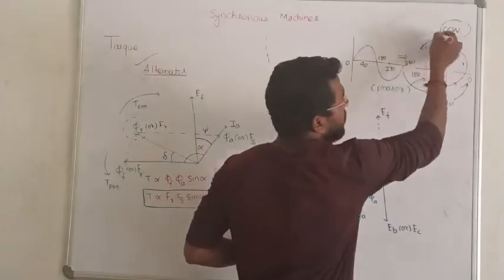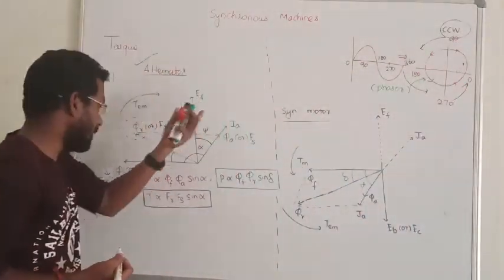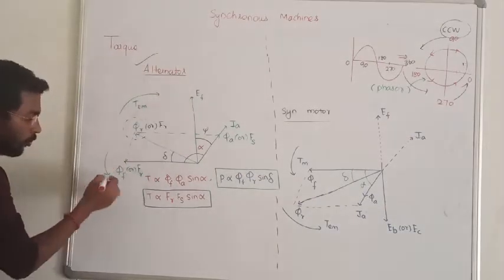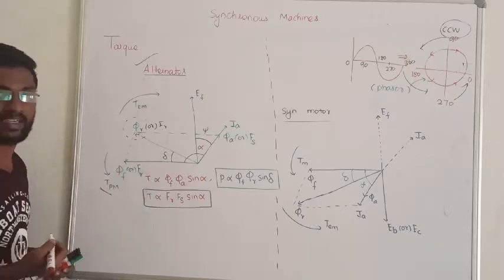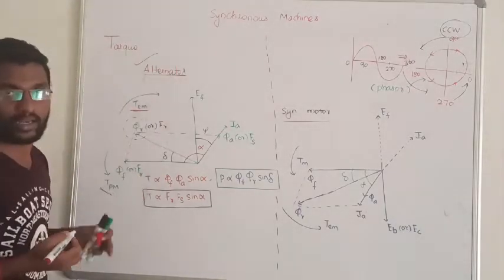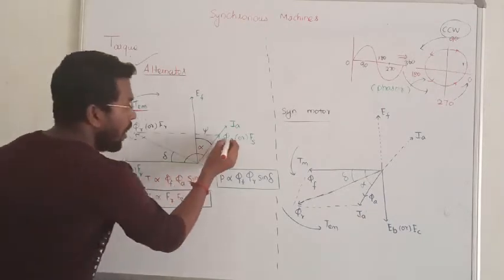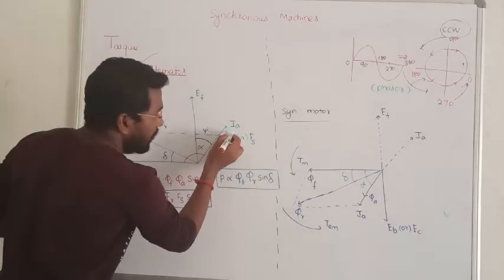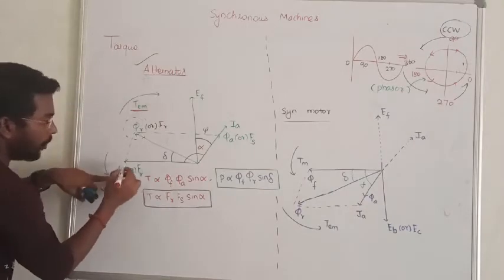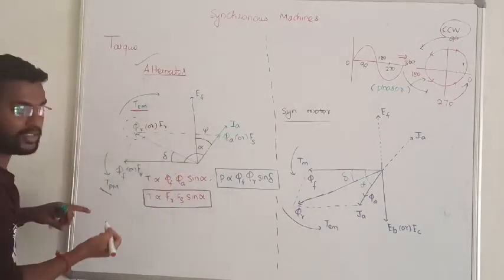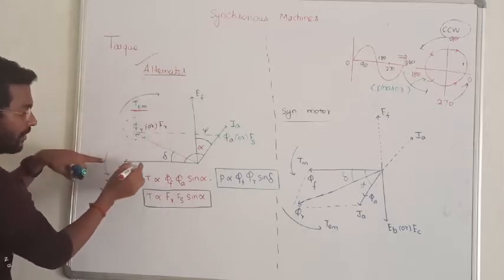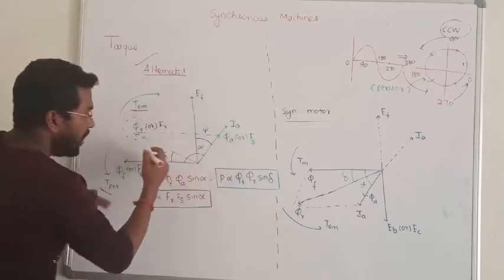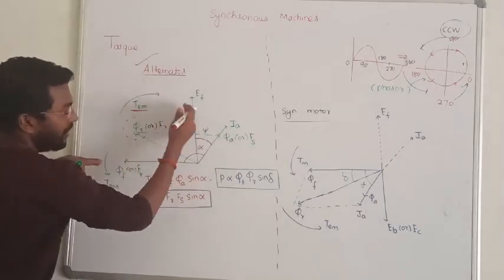Tell me, what is the direction of the phasor? The phasor rotates in counterclockwise direction. So we take the prime mover torque as the reference of the phasor. The phasor diagram of the alternator is rotating counterclockwise. That is the interaction between rotor flux and armature flux. The rotor flux will try to interact with the armature flux, and in the same direction, the machine develops an electromagnetic torque. This torque will try to interact and will travel in clockwise direction.